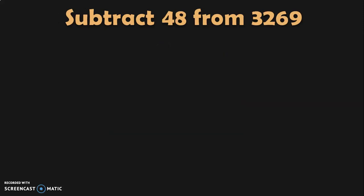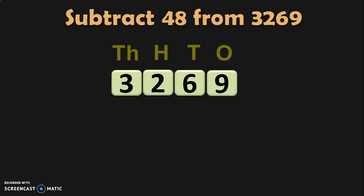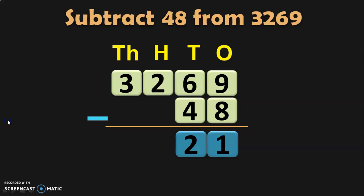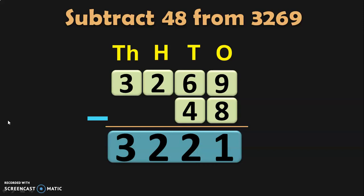The next example is subtract 48 from 3,269 — subtracting a 2-digit number from a 4-digit number. Write down the bigger number and the place values so you can place the smaller number correctly. Ones place: 9 minus 8 is 1. Tens place: 6 minus 4 is 2. In the hundreds place, there is a 2 in the first number and no digit in the second number, so write down 2. In the thousands place, there is no digit in the second number, so write down 3. Subtracting 48 from 3,269 gives 3,221.